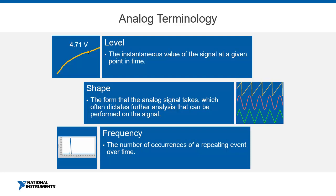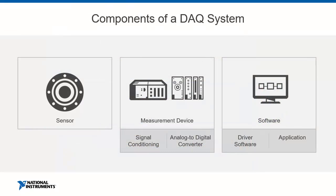Now let's move on to data acquisition devices themselves, and discuss signal conditioning first. Signal conditioning is used so that a signal is acceptable to the DAQ device. It can be done externally or, in many cases, is built into the DAQ device itself. The DAQ device is first responsible for manipulating the signal to its acceptable form, then performing the analog-to-digital conversion. When purchasing a DAQ device, there are many different modules specified for particular measurements — for example, thermocouple modules include signal conditioning that amplifies your low-voltage measurements to something much more usable.